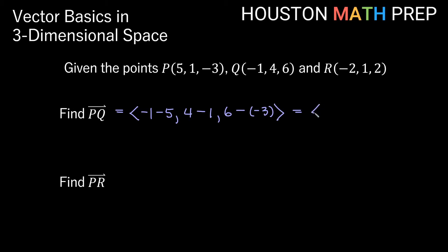And so doing terminal point minus initial point, then we can see here that we get the vector negative 1 minus 5 will be negative 6. 4 minus 1 is obviously 3. Here this will be like addition, so 6 plus 3 actually gives us positive 9. So our vector PQ is actually negative 6, positive 3, positive 9.